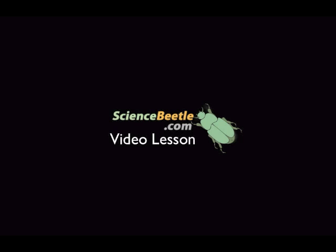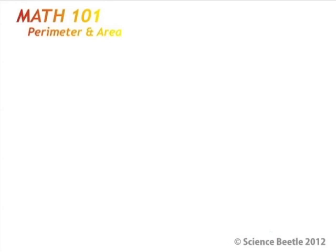Science Beetle. Welcome back students. In this video, we're going to be focusing on calculating the area. In the previous lesson, we calculated the perimeter of a square, rectangle, triangle, as well as the circumference for a circle. But in this section, we're going to talk about how we calculate area for each of those structures.